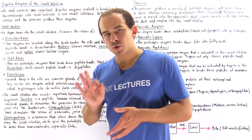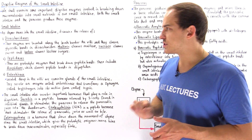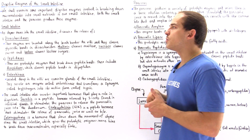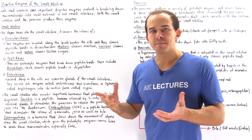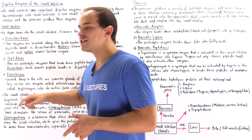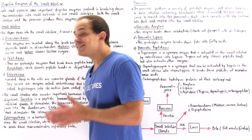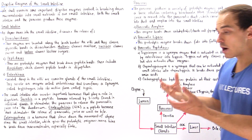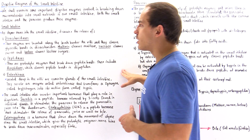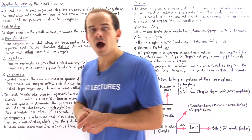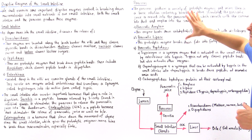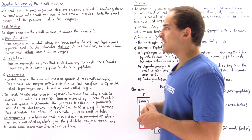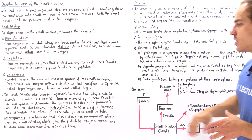Now let's discuss the three important types of hormones produced by the small intestine that stimulate the process of digestion. Let's begin with the peptide hormone known as secretin. Secretin is a peptide hormone released by glands found in the small intestine, and what it does is stimulate the pancreas to release the pancreatic juice, which consists of many proteolytic enzymes.